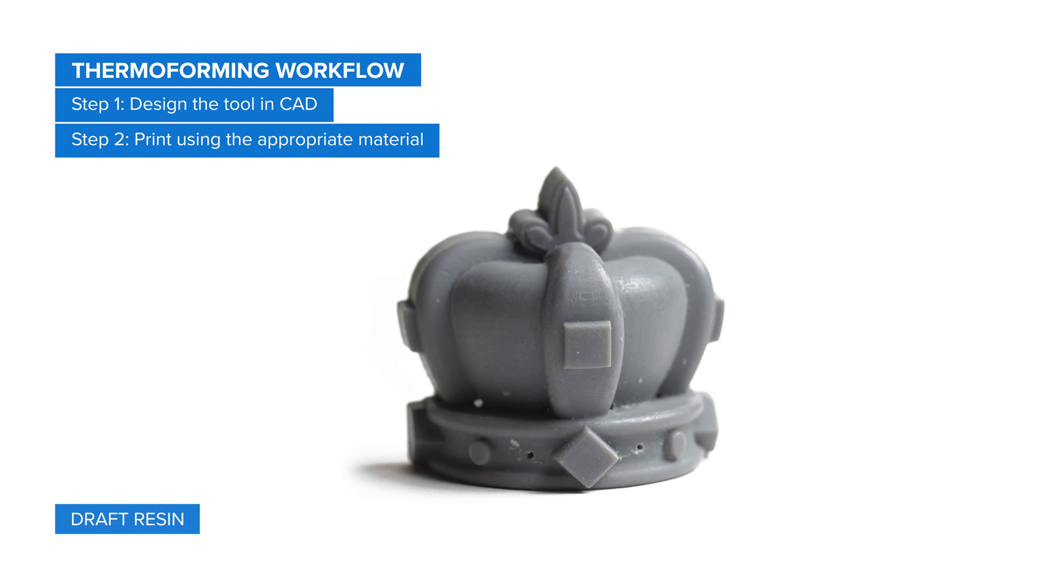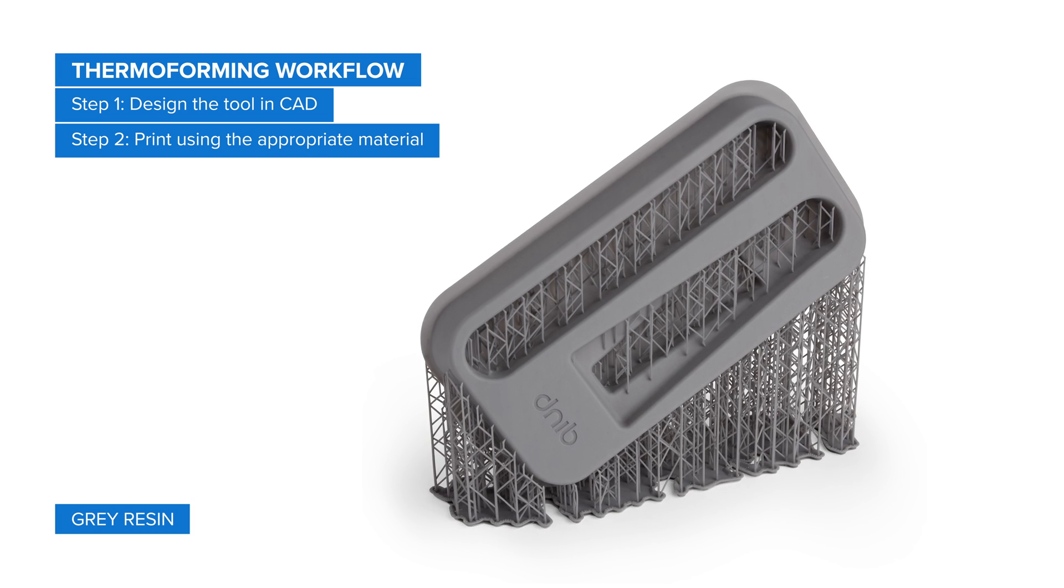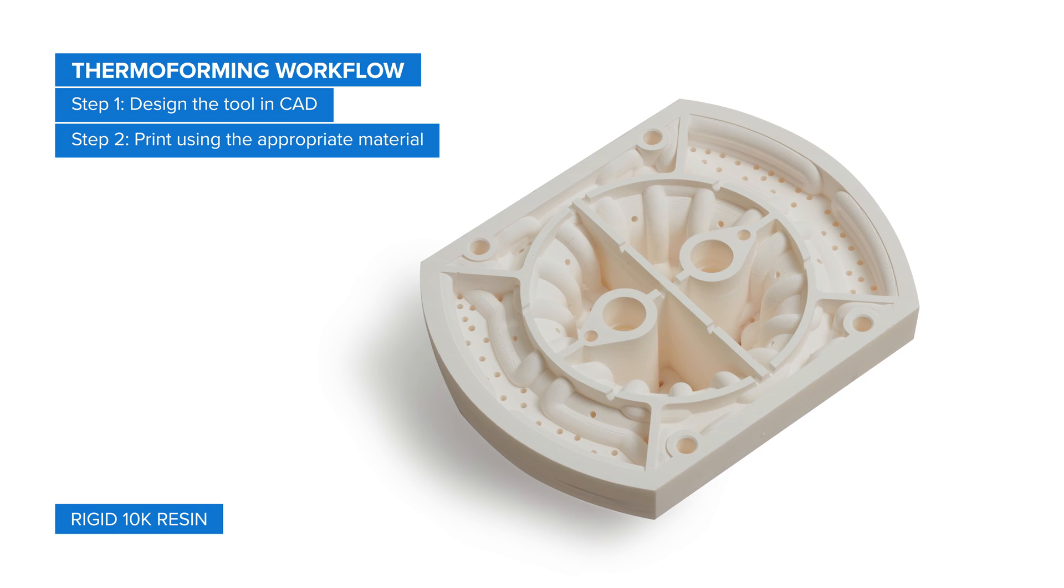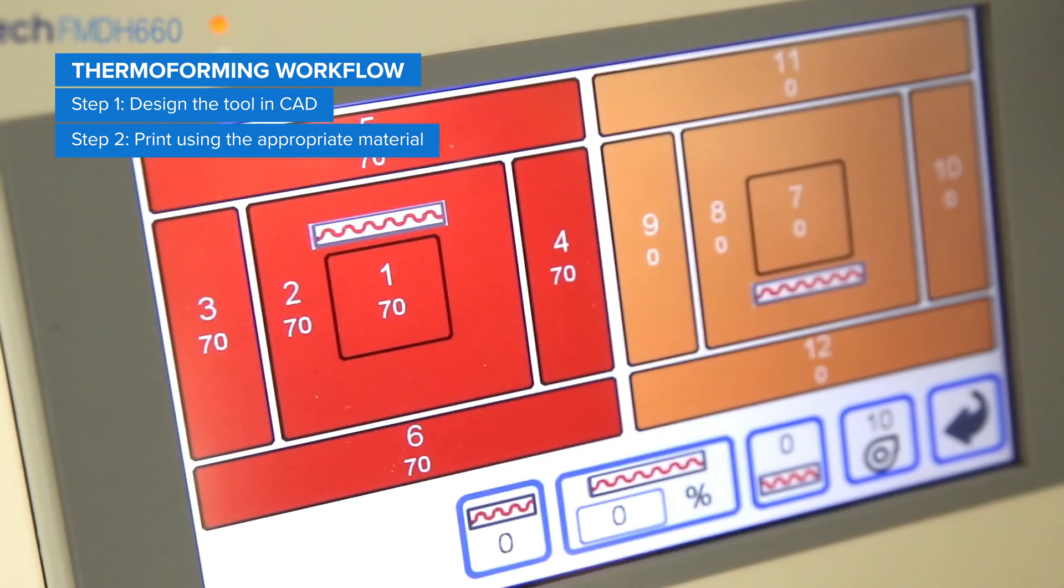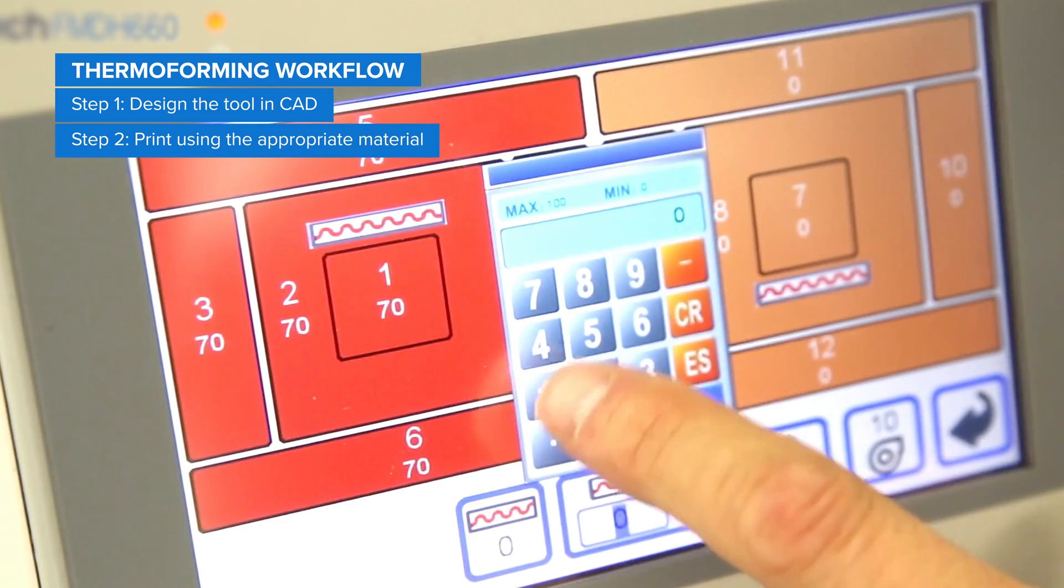Use draft resin for a quick turnaround, gray resin for the smoothest surfaces, and rigid 10K resin for challenging forming conditions such as higher temperatures or for producing series with short cycle times.